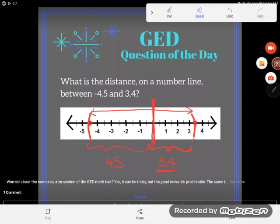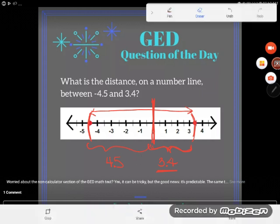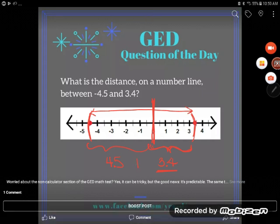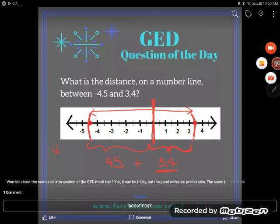Now I see two pieces and I need to put them together. I have this side, 4.5, and that side, 3.4. To find a total in math class, you add. So I'm going to add that 4.5 and that 3.4. Notice no negatives got involved because I was just considering the distance. 5 plus 4 is 9, 4 plus 3 is 7, so my answer is 7.9.